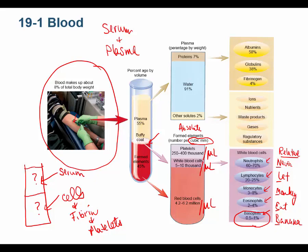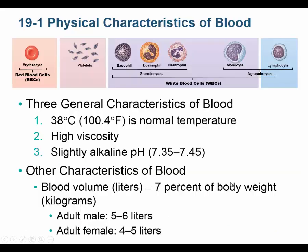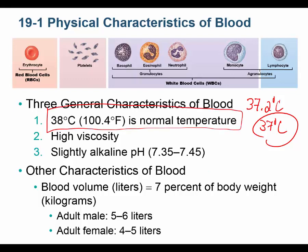Blood runs at core body temperature, which is 38°C — slightly warmer than the 37°C you measure axillary or orally. Core body temperature is more accurately measured rectally. The 37°C figure is true for armpit or oral readings, but blood circulates at 38°C.